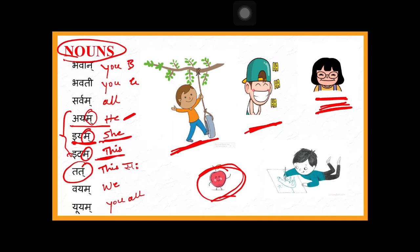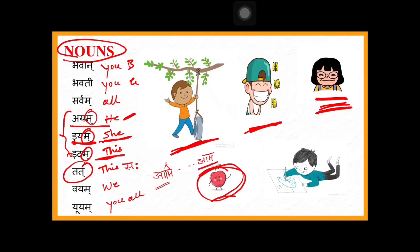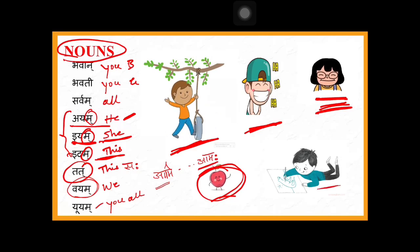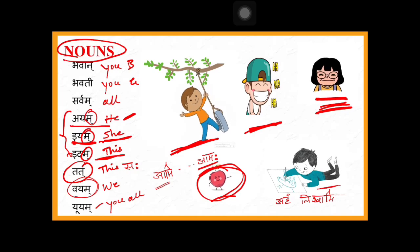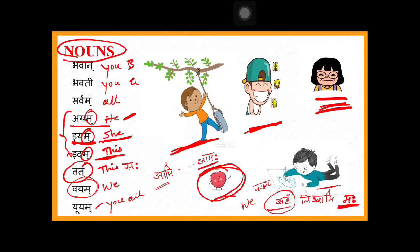We should remember: aham gachami, vayam gachamaha. In plural, 'maha' comes at the end. Aham is singular and vayam is plural — we cannot mix them. For example, aham likhami means 'I write.' If all of us are writing, we say vayam likhamaha — not likhami. This is how the pronouns aham and vayam are used correctly.